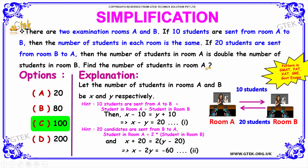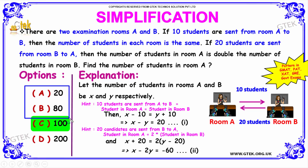The options given are: option A is 20, option B is 80, option C is 100, and option D is 200.